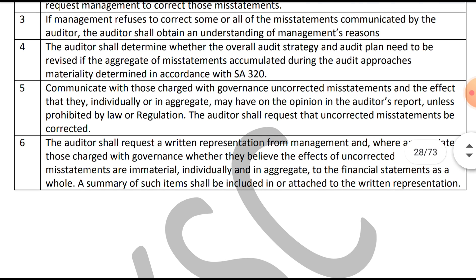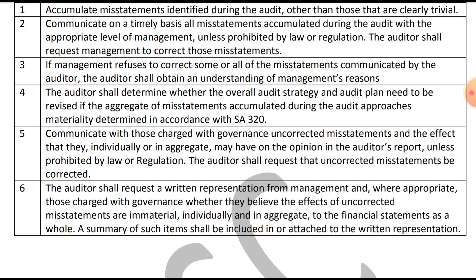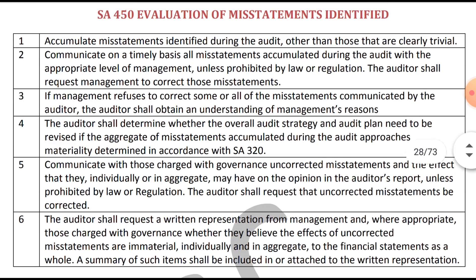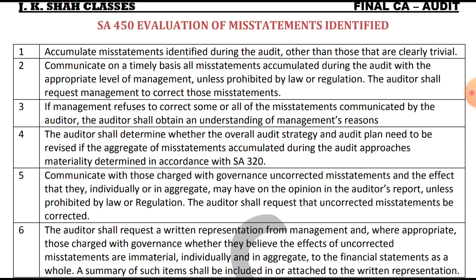The sixth point is that the auditor shall request written representation from the management, and where appropriate, those charged with governance, as to whether they believe the effect of the uncorrected misstatements is immaterial — individually or in aggregate — to the financial statements as a whole. A summary of such items shall be included in and attached to the written representation, and the auditor should attach all supporting evidence and get it signed by management or TCWG. This completes ISA 450.